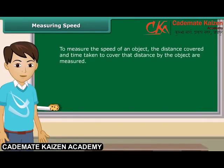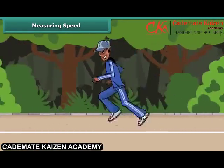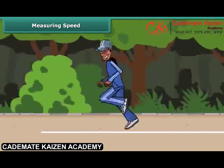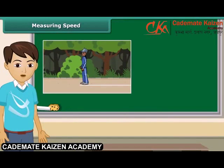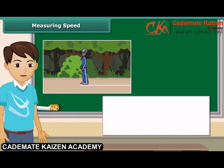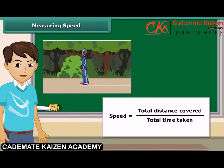To measure the speed of an object, we measure the distance covered and the time taken to cover that distance by the object. After that, we apply the formula of speed. Draw a line and ask a friend to stand on it. Allow him to run till he wants to stop. Note the total time taken from the moment he started to the moment he stopped. Measure the distance covered by your friend, then divide the distance covered by the time taken. What you have calculated is the running speed of your friend.